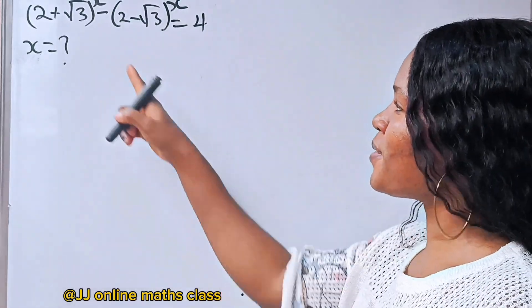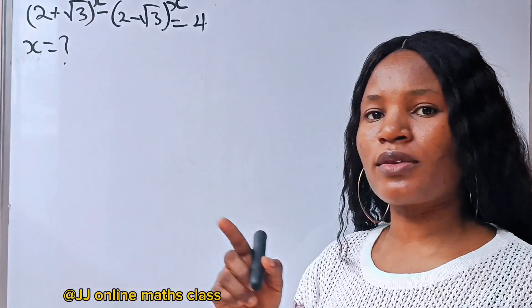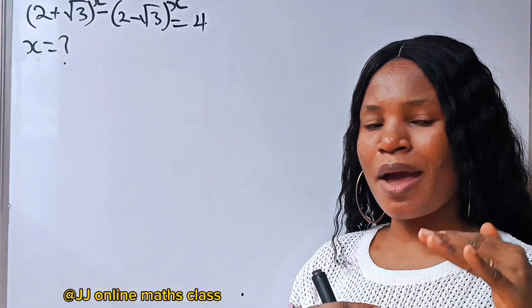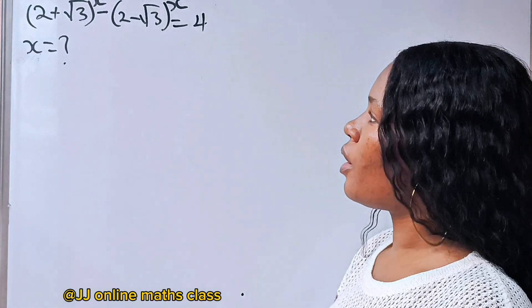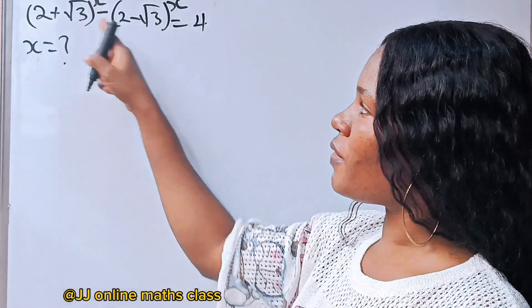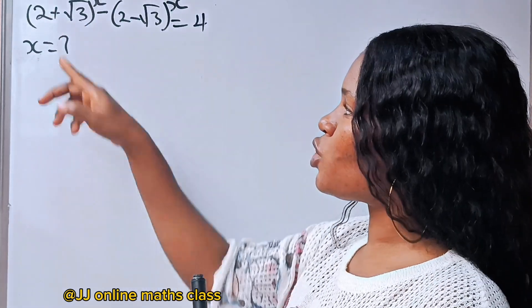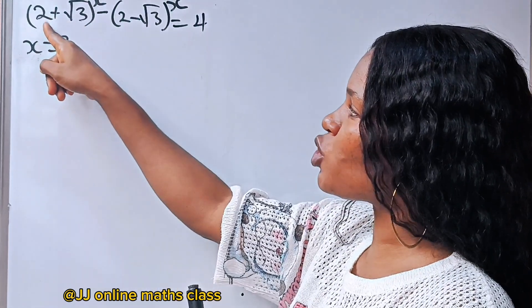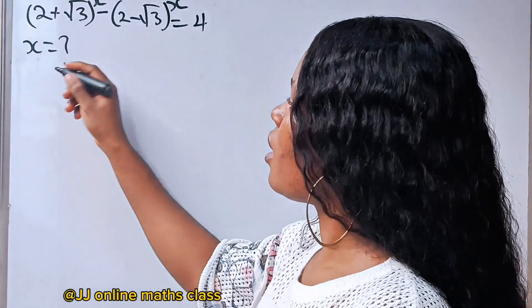Let me show you how to solve this type of math Olympiad question step by step. First, bring out one of the terms in the brackets. Let's choose the first one: 2 plus root 3.